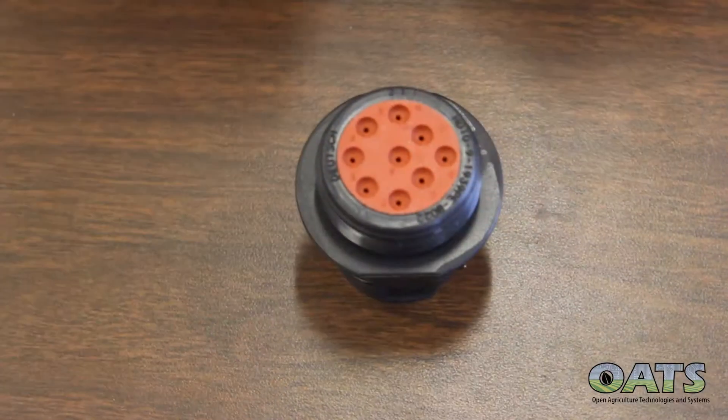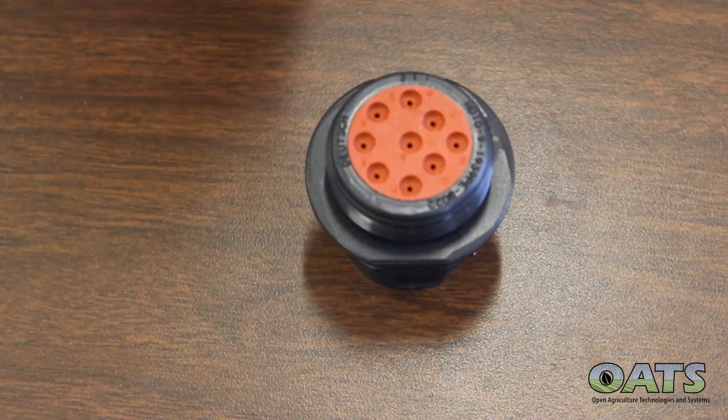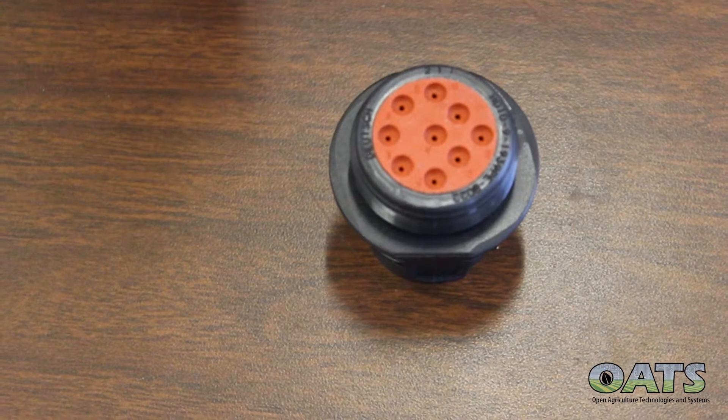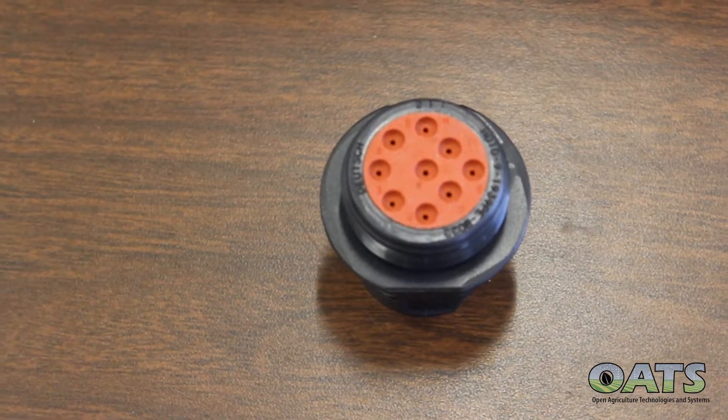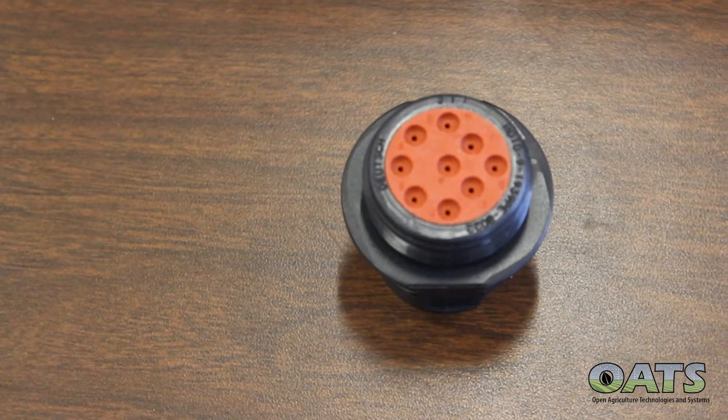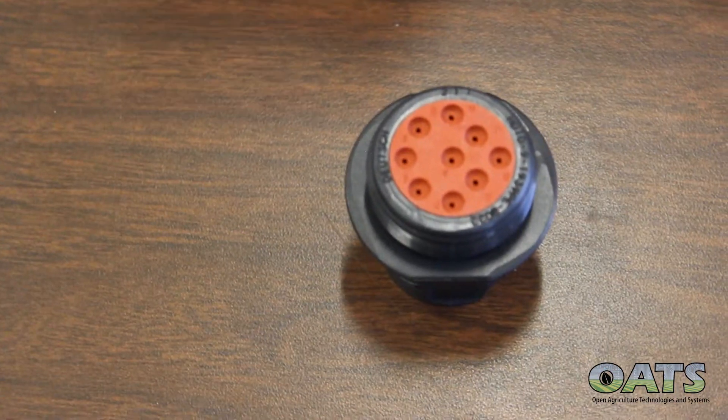Now we will insert the premade wires along with their headers onto the isobus male port with the letter and color corresponding scheme that we defined before.